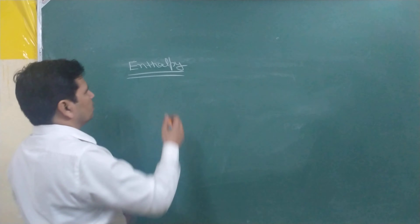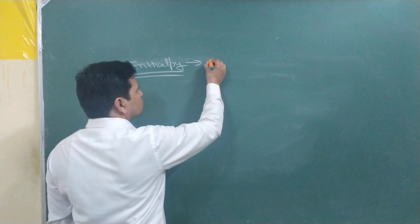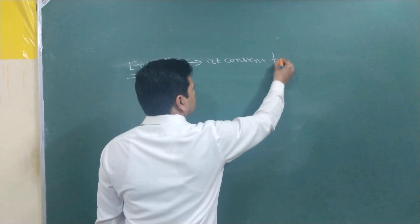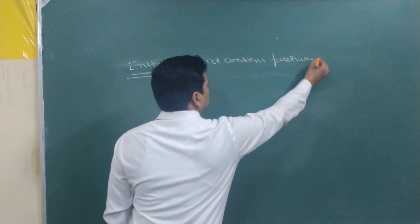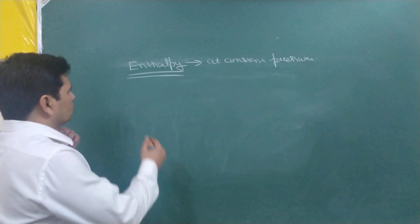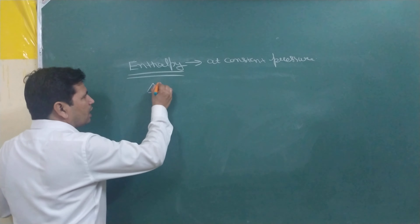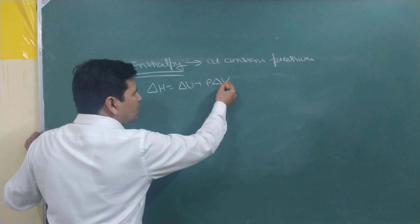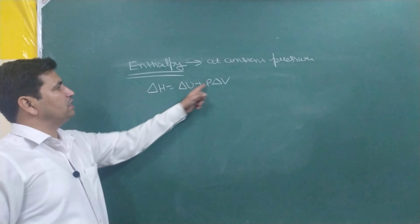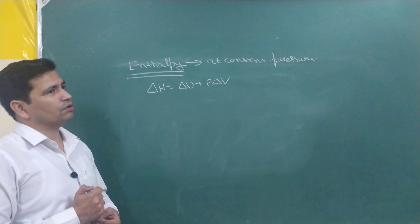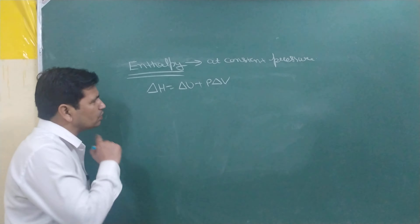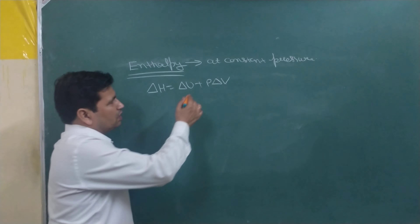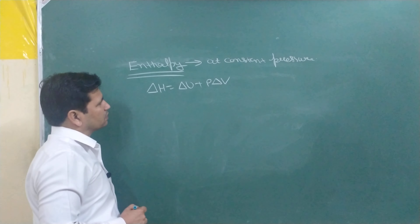Enthalpy is the change in heat of a system at constant pressure — pressure must be constant. The formula for enthalpy is: delta H is equal to delta U plus P delta V. The P delta V term comes in because volume is changing. This is the complete formula for calculating the change in enthalpy. We can also modify this formula further for numerical problems.